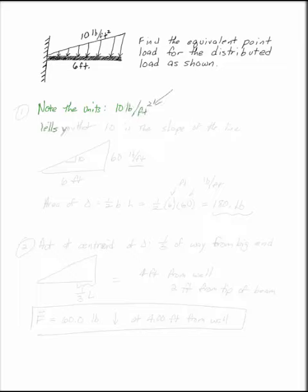It's this little 2. It tells you that 10, your 10 pounds per foot squared, is the slope of the line of your distributed load.